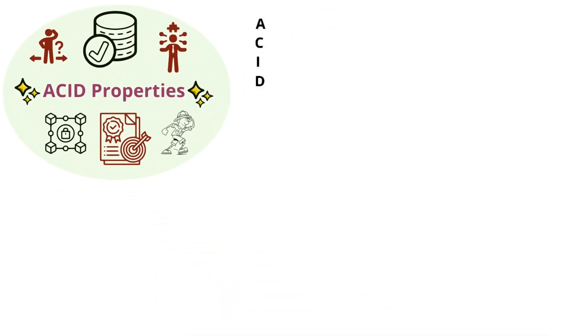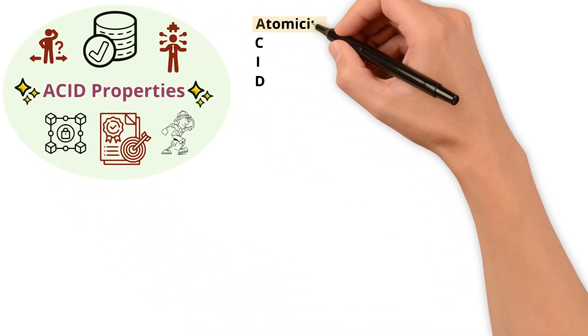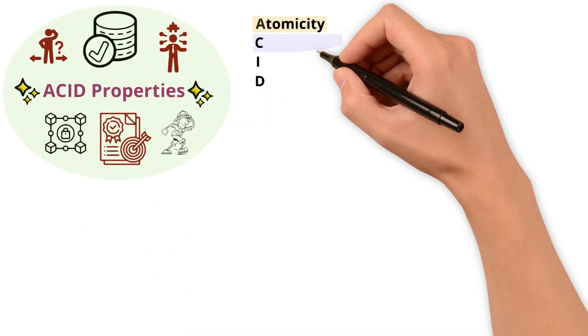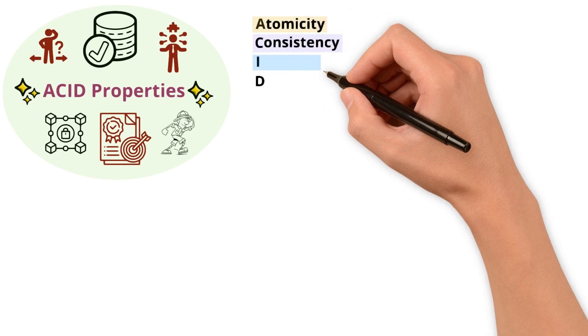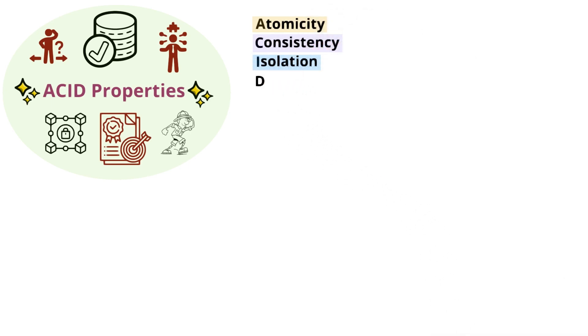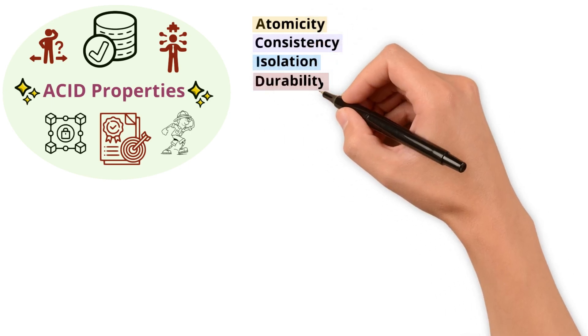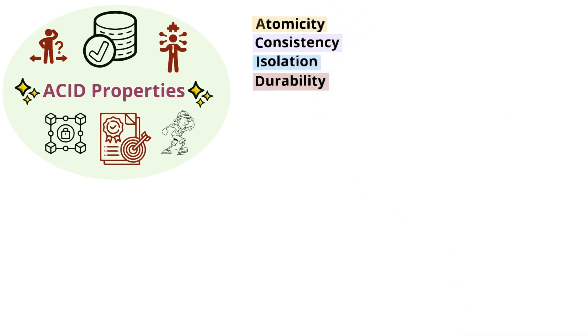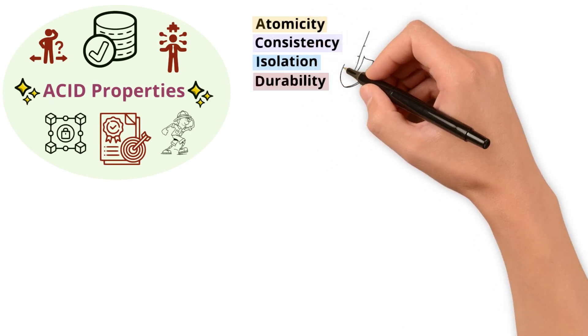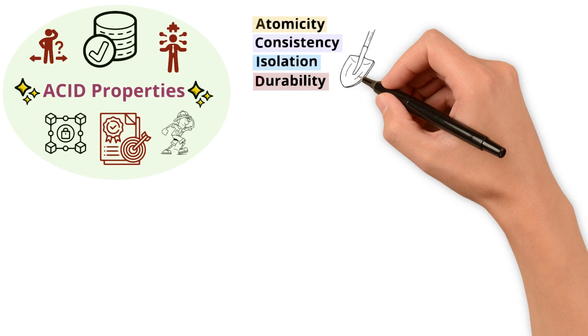ACID stands for Atomicity, Consistency, Isolation, and Durability. Let's delve into each property.